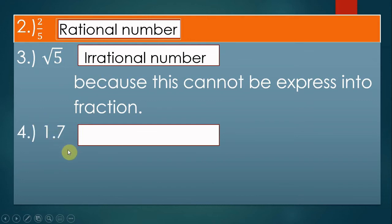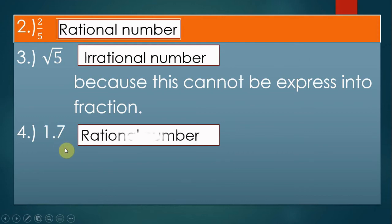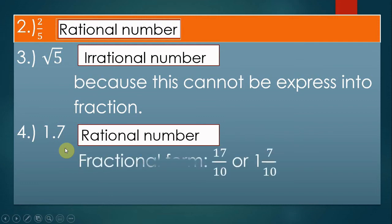Number four: 1.7. Is this a rational number or irrational number? Can we change 1.7 into a fraction? Yes — therefore this is a rational number. The fractional form of 1.7 is 17 over 10, or 1 and 7 over 10.